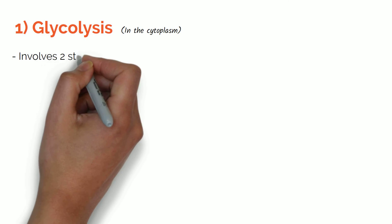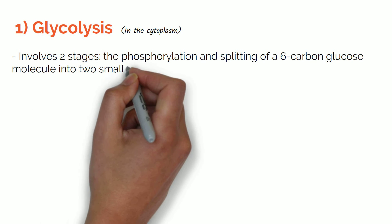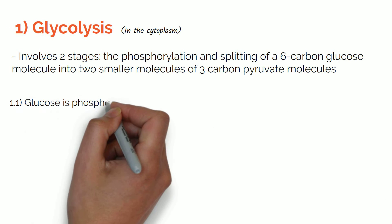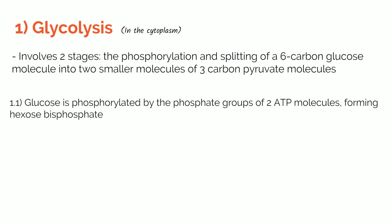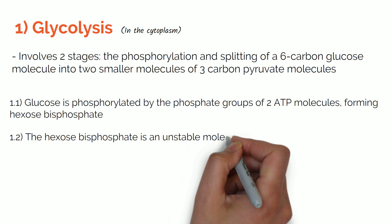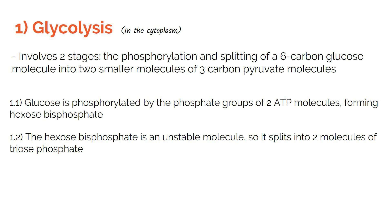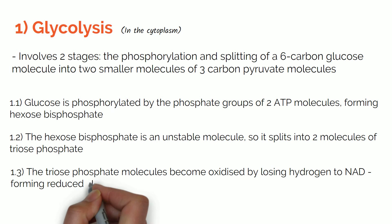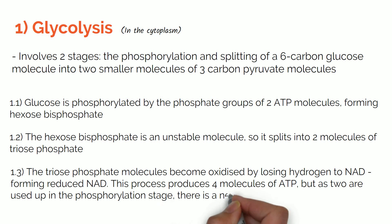Glycolysis occurs in the cytoplasm of the cell and involves two stages: the phosphorylation and then the splitting of a six-carbon glucose molecule into two smaller molecules of three-carbon pyruvate. Glucose is phosphorylated by the phosphate groups of two ATP molecules, forming hexose bisphosphate. This unstable molecule splits into two molecules of triose phosphate. The triose phosphate molecules become oxidised by losing hydrogen to NAD, forming reduced NAD. This process produces four molecules of ATP, but as two were used up in the phosphorylation stage, there is a net gain of two ATP molecules from glycolysis.